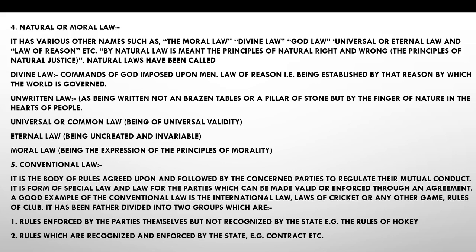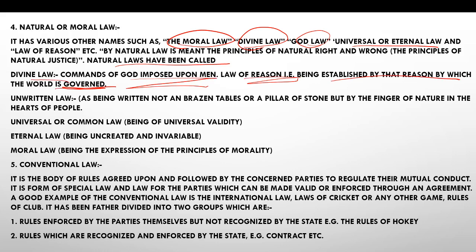Natural law or moral law: natural law has been called moral law, divine law, God's law, universal law, eternal law, and law of reason. By natural law is meant the principles of natural right and wrong. Divine law means what God has imposed on human beings — the law by which God governs the world. Unwritten law is not written anywhere but exists in people's nature and hearts — that is unwritten law. Universal or common law is what we commonly follow through the universe. Eternal law is uncreated and invariable. Moral law is based on the principle of morality — do what is right, don't do what is wrong.